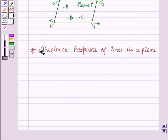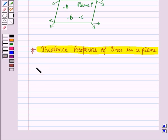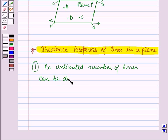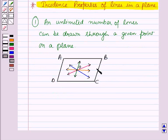And now we will learn the incidence properties of lines in a plane. First is, an unlimited number of lines can be drawn through a given point on a plane. Now you can see here that on the plane ABCD, there can be unlimited number of lines passing through the point O.